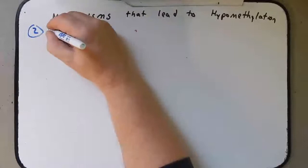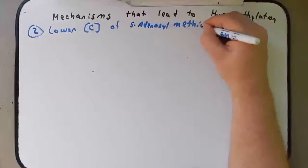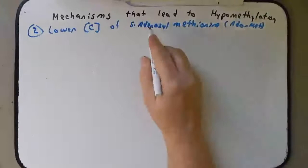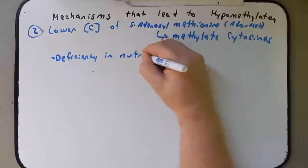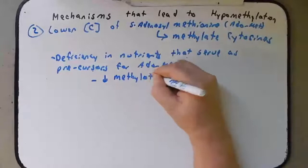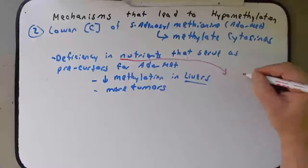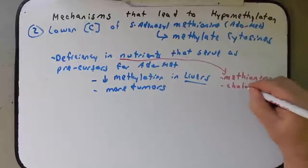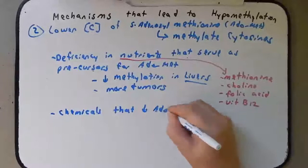The second mechanism involves lower concentrations of S-adenosyl methionine, which we often just abbreviate as AdoMet. This is what is used to methylate cytosine. In experiments when we give mice a deficiency in nutrients that serve as precursors for AdoMet, we see decreased methylation in livers and we do see more tumors. Some of these nutrients include methionine, choline, folic acid, and vitamin B12. There are also some chemicals that decrease AdoMet, which decreases methylation — some of these chemicals include arsenic and alcohol.